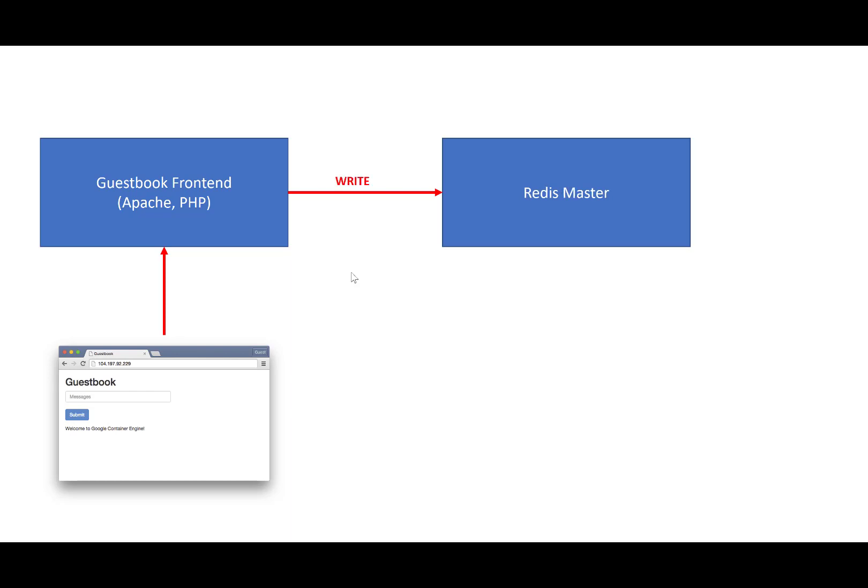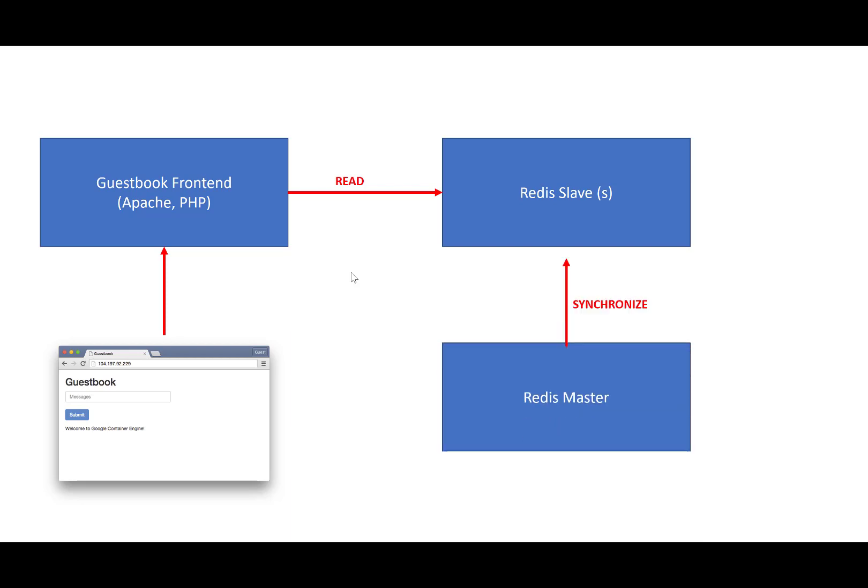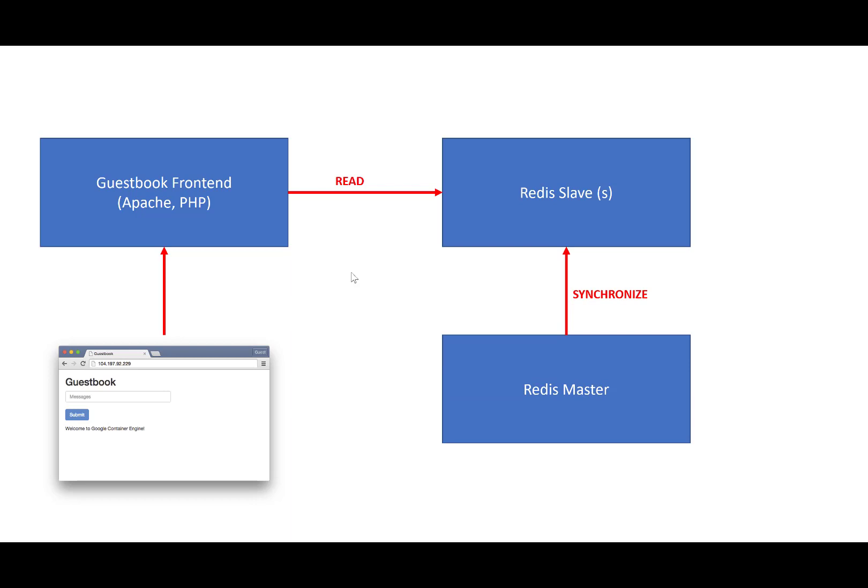The backend is a Redis cluster. When the frontend writes to the backend, it writes to the Redis master. We have a single Redis master and writes happen to the Redis master. Whenever we read data, we read from the Redis slaves — there are two replicas. So when we do a read, we read from the Redis slave. There is code in the PHP to handle that as well. The Redis slaves need to synchronize data from the Redis master because that's where all the data is written.